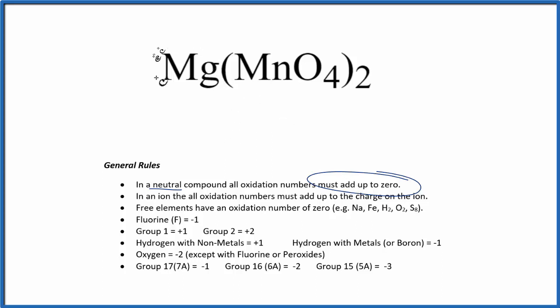As we look down our list, we know that magnesium is in group 2. So group 2 oxidation number is plus 2. We won't find manganese here, but we will find oxygen. Oxygen is going to be minus 2, with a few exceptions.